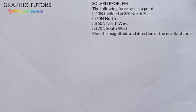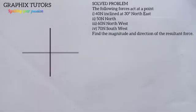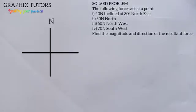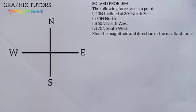Since we are dealing with bearings — north, east, south, and west — we draw the four cardinal points. At that point, we draw our y-axis and x-axis. The top of the y-axis is north, the bottom is south, the right of the x-axis is east, and the left is west.